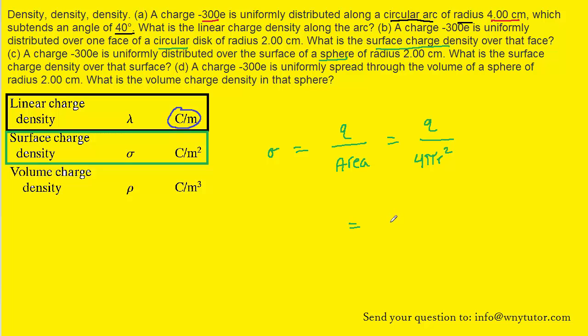So with that minor adjustment, we can plug in the known values. And in this case, we end up with roughly negative 9.55 times 10 to the minus 15 coulombs per meter squared. So this will be the correct answer to part C.